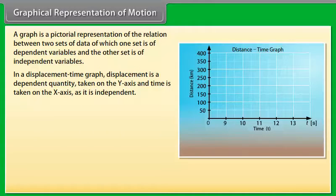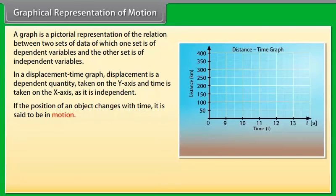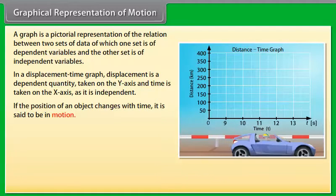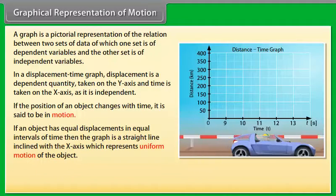is a dependent quantity taken on the y-axis and time is taken on the x-axis as it is independent. If the position of an object changes with time, it is said to be in motion. If an object has equal